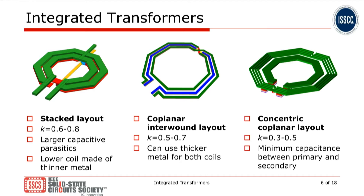We can avoid this by using a coplanar interwound layout, where we can use a thick metal for both coils. Another option is the concentric coplanar layout, where we minimize the capacitance between the primary and the secondary windings. In this case, however, we achieve a somewhat reduced magnetic coupling.